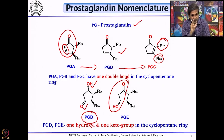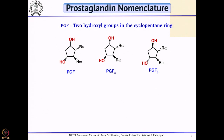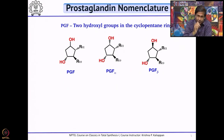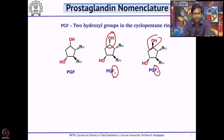We now come to the last category, PGF. Here, the ketone which was present in PGD and PGE is reduced. In other words, you have two hydroxyl groups in the cyclopentane ring — those are called PGF. When you read literature, you will see PGF alpha and PGF beta. That means the ketone which was reduced: if the stereochemistry is alpha, you write PGF alpha; if it is beta, you write PGF beta. That is how the names are given for prostaglandins.